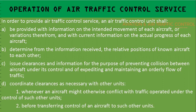An ATC unit shall determine from the information received the relative positions of known aircraft to each other. They shall issue clearances and information for the purpose of preventing collisions between aircraft under their control, and for expediting and maintaining an orderly flow of air traffic. They must coordinate clearances with other units whenever an aircraft might conflict with traffic under the control of those other units, or before transferring control of an aircraft to such other units.